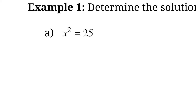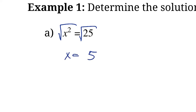x squared equals 25. How do we solve this equation? Well, we know solving an equation means isolating x, so we need to get rid of that squared. In order to do that, we need to take the square root of both sides. So x just equals 5, correct?